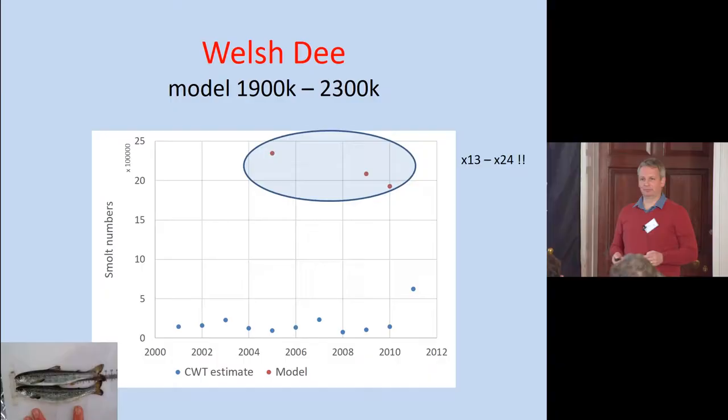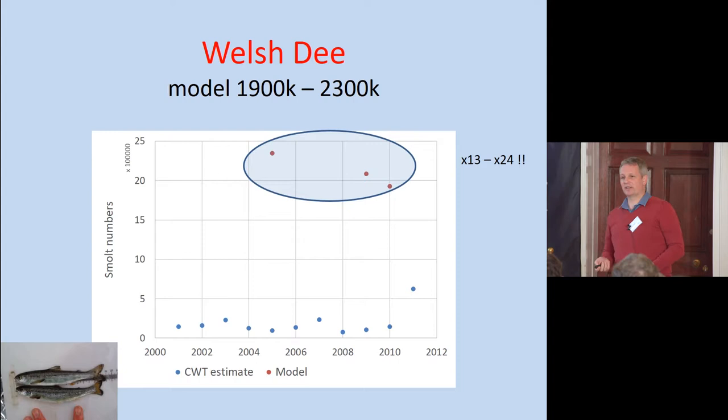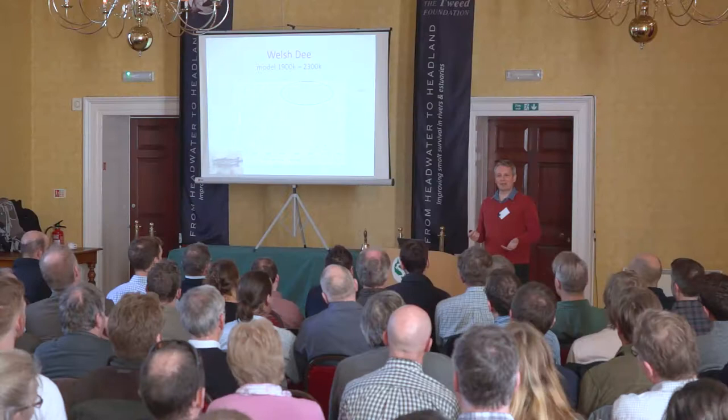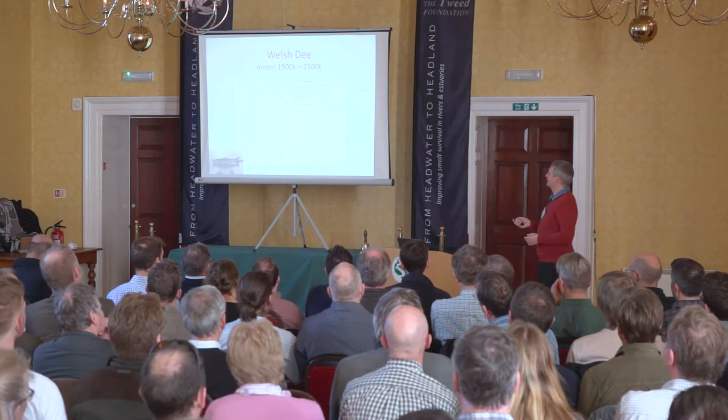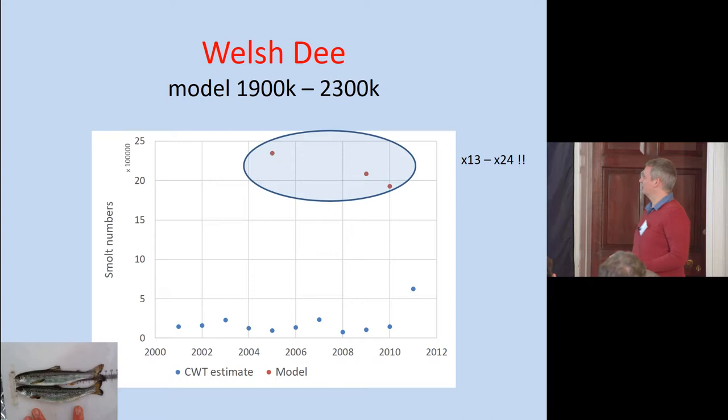We picked three years — 2005, 2009, and 2010 — because they're ones that had good numbers of recaptures. To be honest, I did actually try 2011 first, and I got a really close correlation, but then Ian pointed out that 2011 is not where you want to be. The model predicts smolts about 13 to 24 times what we actually see. I might think — oh, that's pretty rubbish. But I'd written the abstract a long time ago, so I had to come and tell you about it anyway.